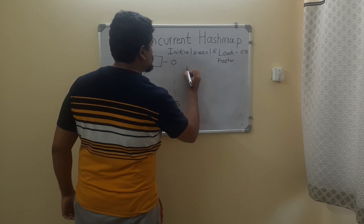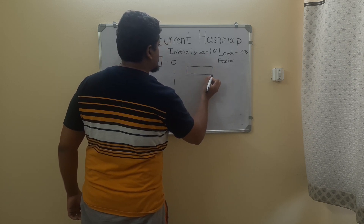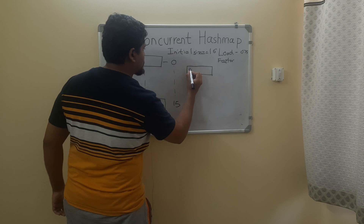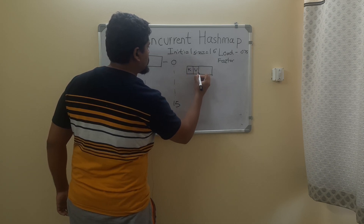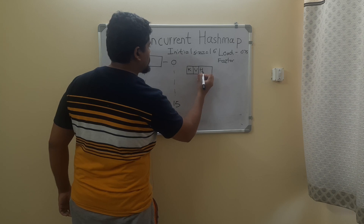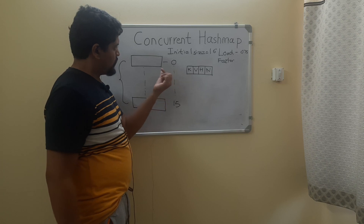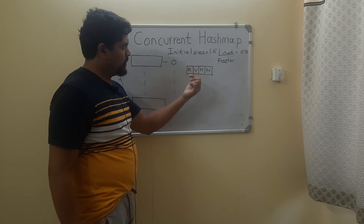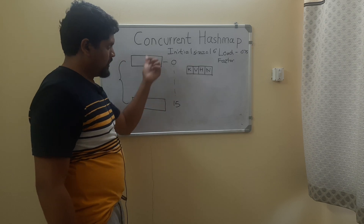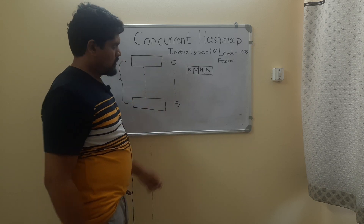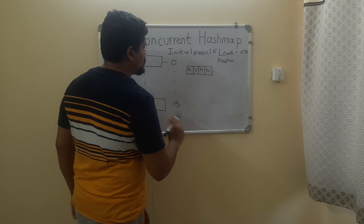Each node of the linked list consists of four parts: key, value, hash code, and next. Key contains the key or the particular element, value contains the value, hash code is used to identify on which location it needs to be placed in the bucket list, and next points to the next node.